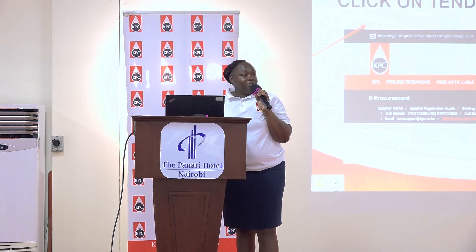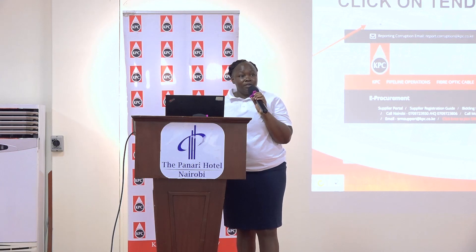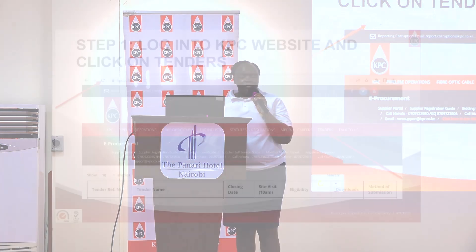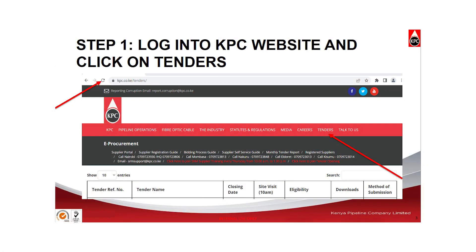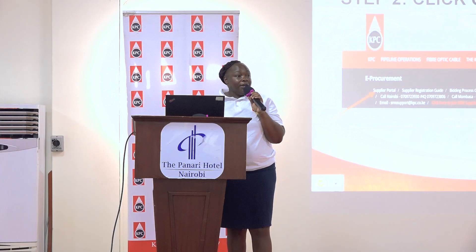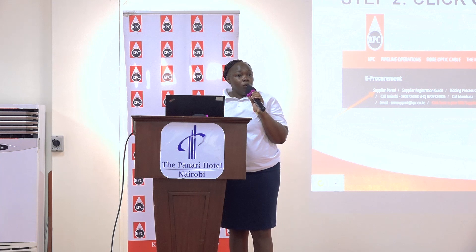The first step will be to log in to the KPC website using the address www.kpc.co.ke. Immediately the page will open up with quite a number of tabs, and you will go directly to the tenders tab. Select the tenders tab. An e-procurement page will pop up.